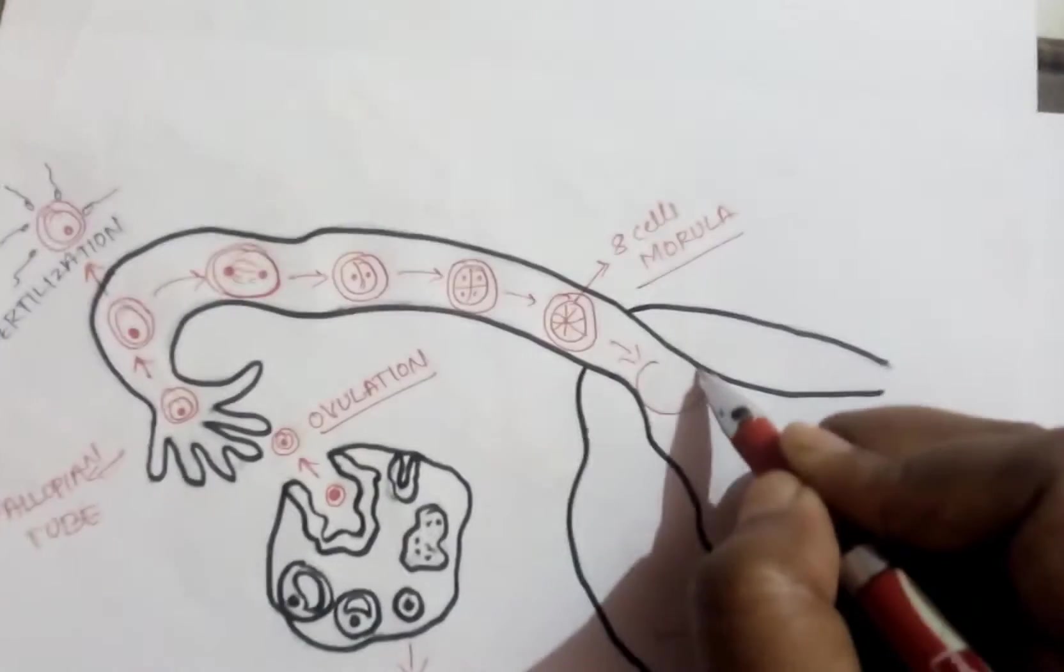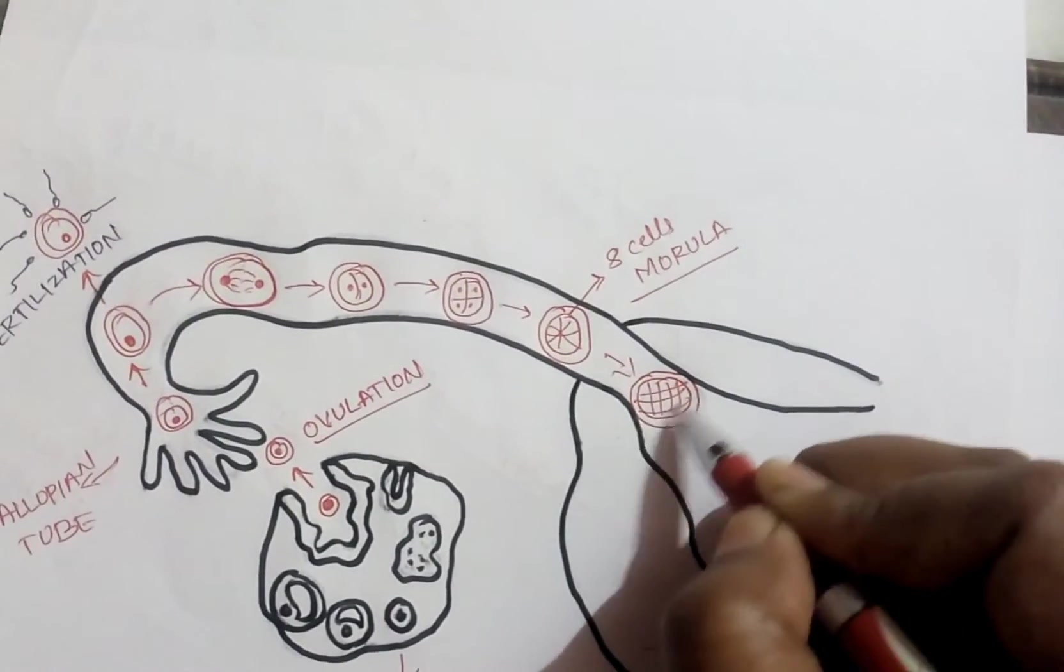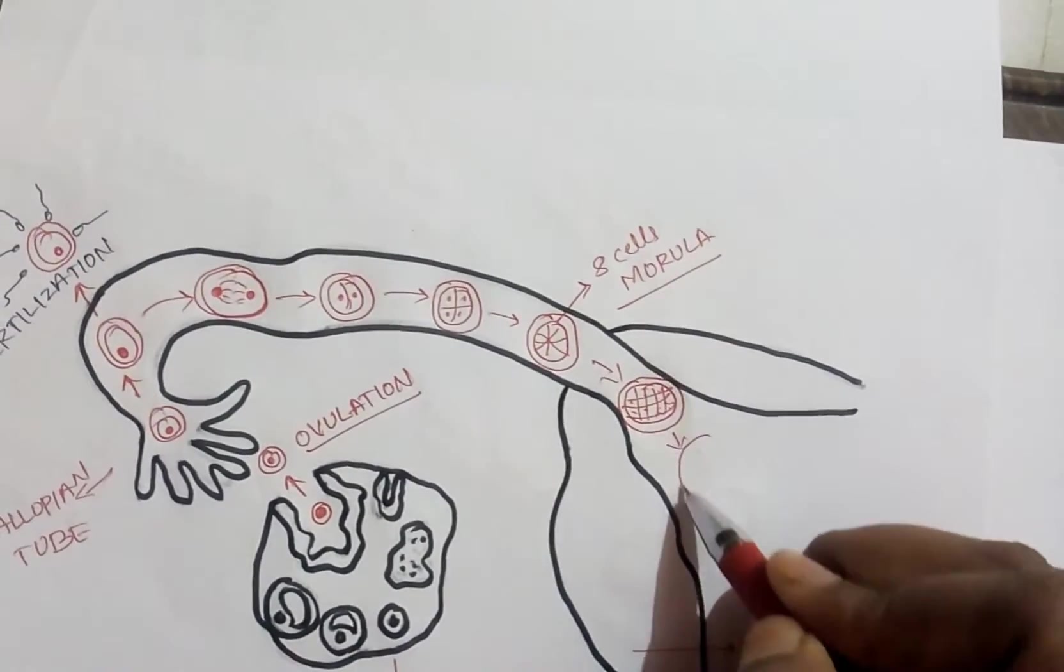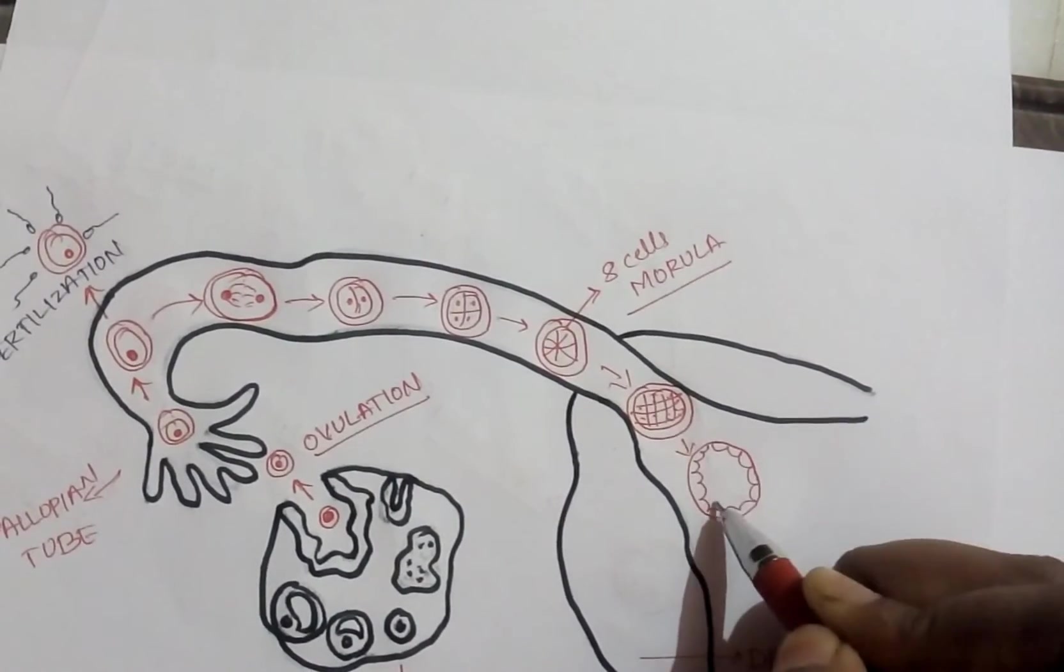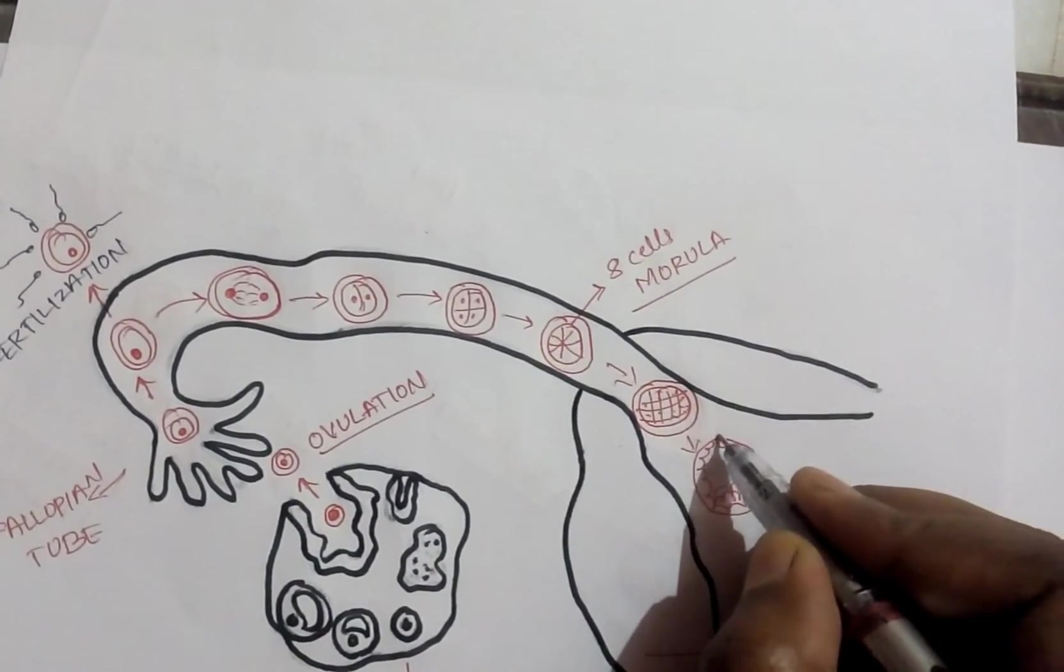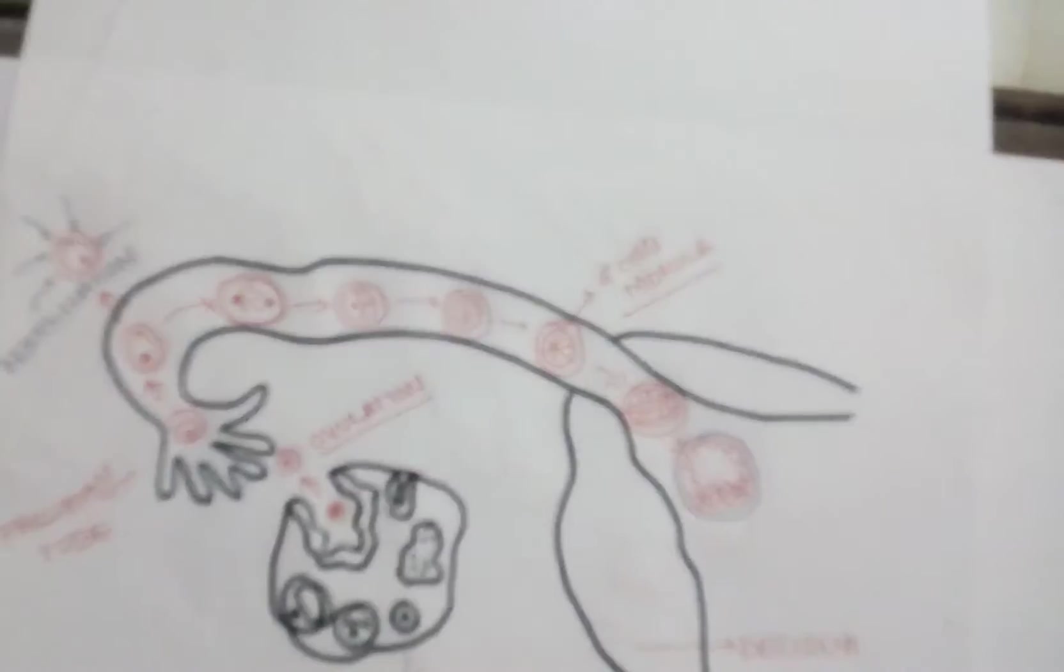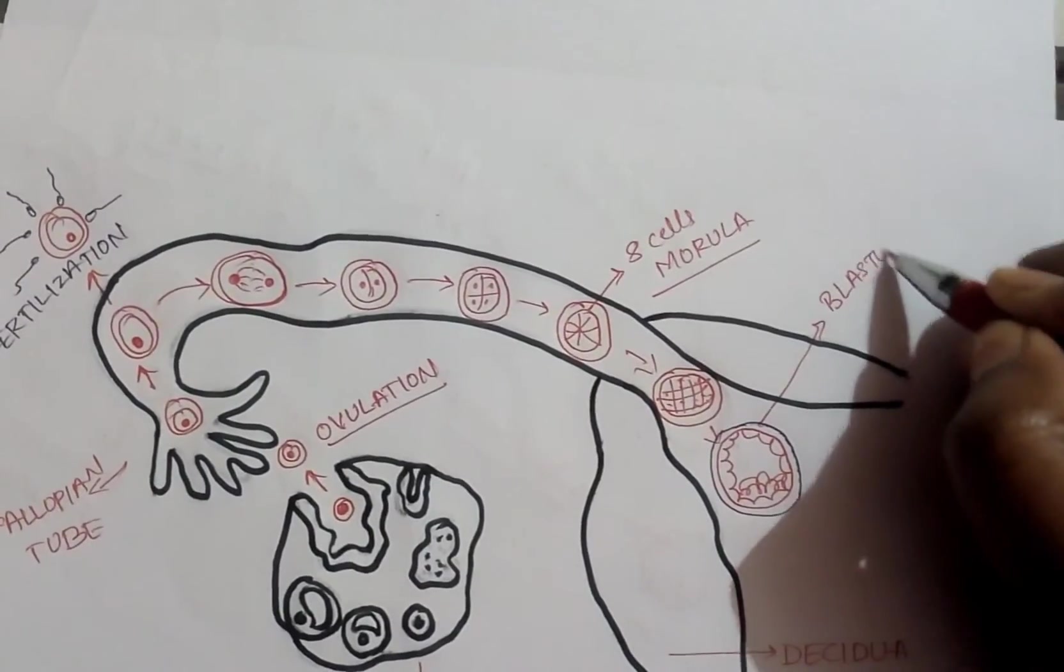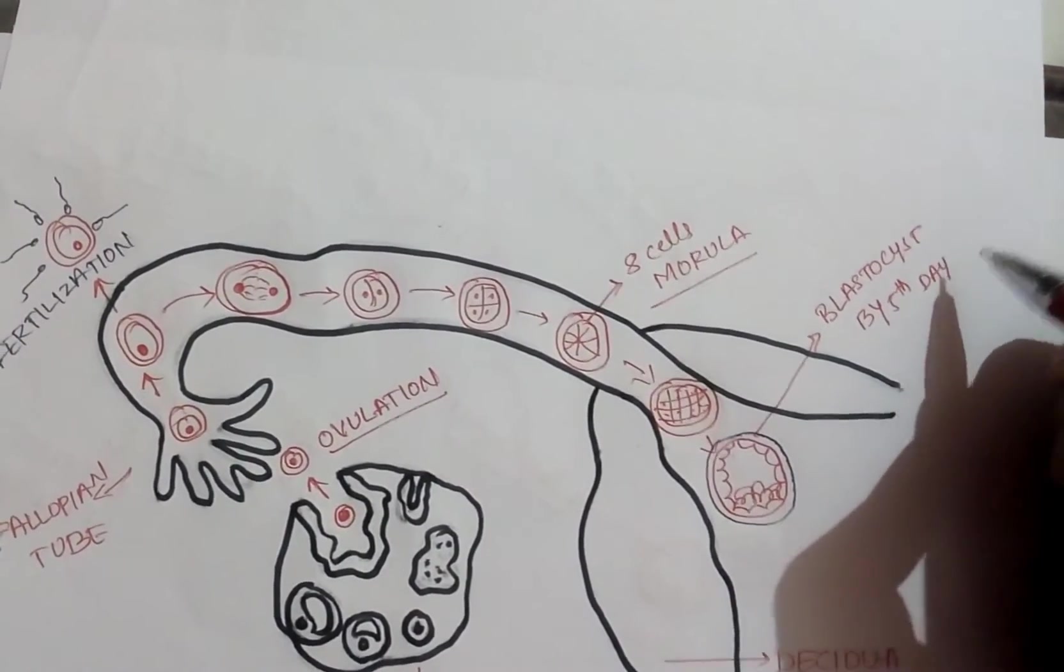After that, it moves towards the uterine cavity and gets divided into number of cells. By the entry into the uterine cavity, it will get further division and converted into blastocyst, which is covered by a covering called zona pellucida. By the fourth to fifth day, the cell enters the uterine cavity, which is called as blastocyst.